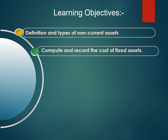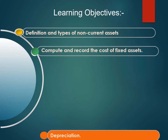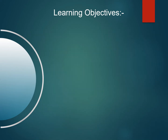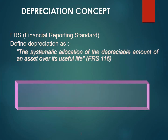We are going to continue the discussion in the subtopics in non-current assets. Now, let us read the definition for depreciation. According to FRS 116, depreciation is defined as the systematic allocation of the depreciable amount of an asset over its useful life.